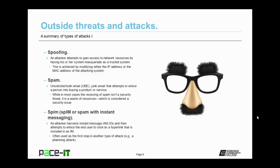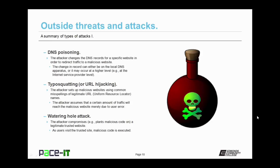Related to spam is SPIM, or spam with instant messaging. This is when an attacker harvests instant message IDs and then attempts to entice the end user to click on a hyperlink that is included in an instant message. SPIM is often used as the first step in another type of attack, as in performing a farming type attack. DNS poisoning is where the attacker changes the DNS records for a specific website in order to redirect traffic to a malicious website. The change in DNS record can either be on the local DNS apparatus or may occur at a higher level, as in at the internet service provider's DNS apparatus.